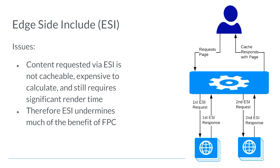If caching was perfect, a cache hit shouldn't have a request to the app server at all. Remember, we're trying to do this because our app servers are CPU-bound — we want to take load off them. If we continue to pass requests through to them via ESI, that's problematic.